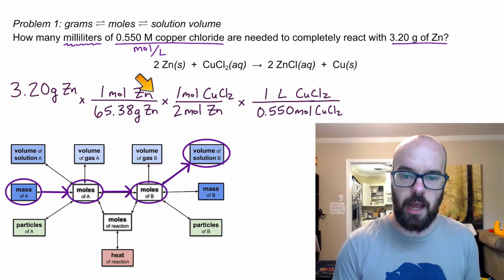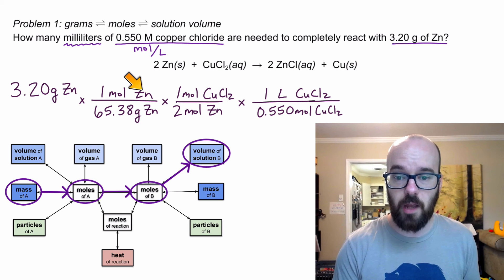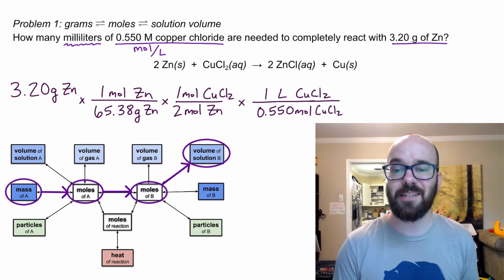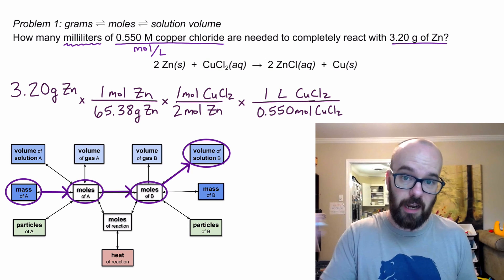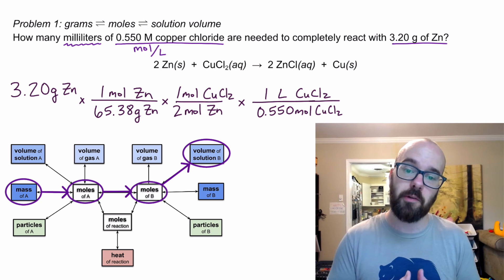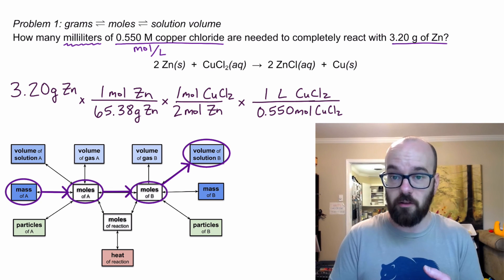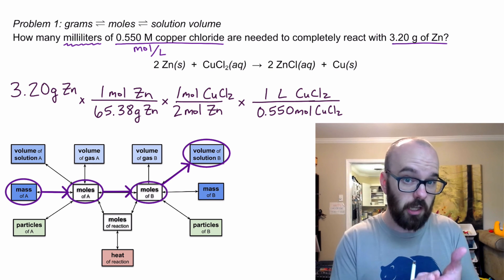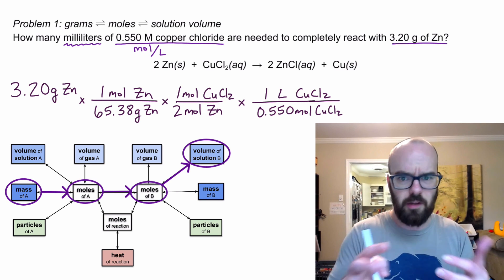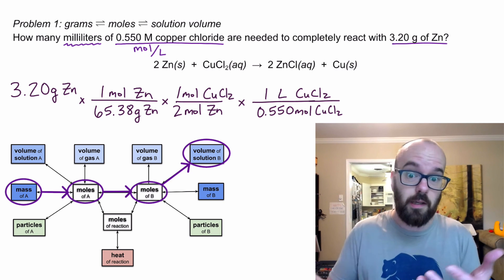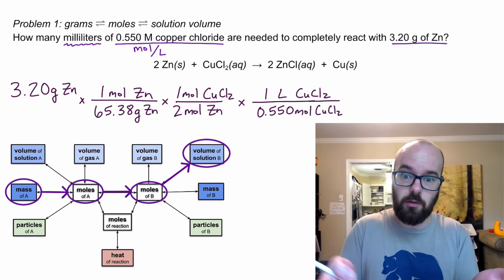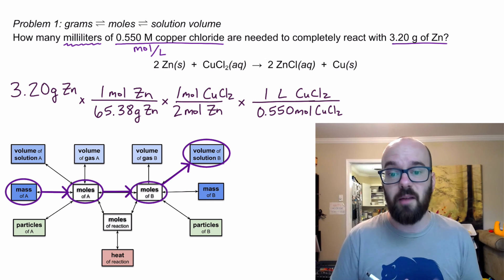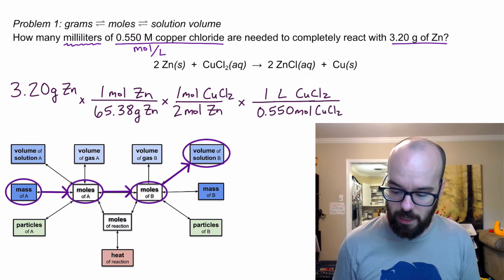Notice I'm writing out the name of the compound or element every time. It takes a little longer, but it's really helpful: for AP readers to follow your work, for your teacher to follow your work, and even for yourself when you get into a longer complicated problem and you forget what you did early on. If you've got everything written out like this, it's a lot more clear and easy to follow. I recommend writing it all out.